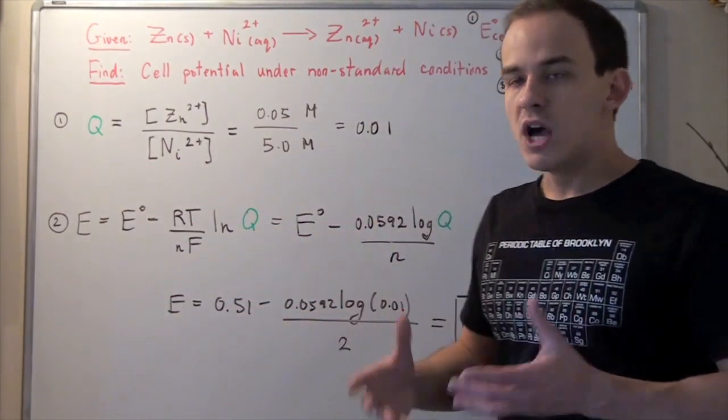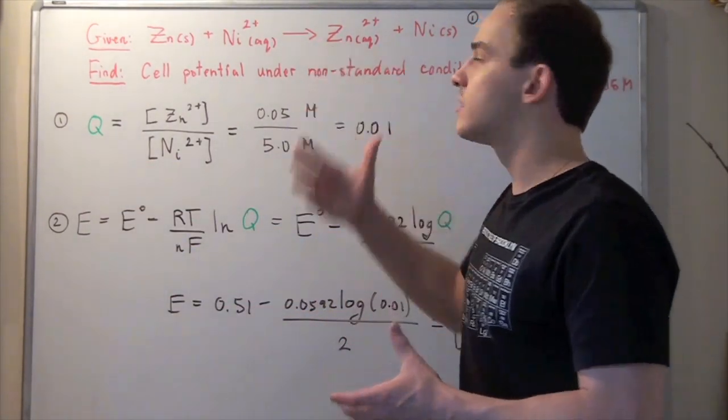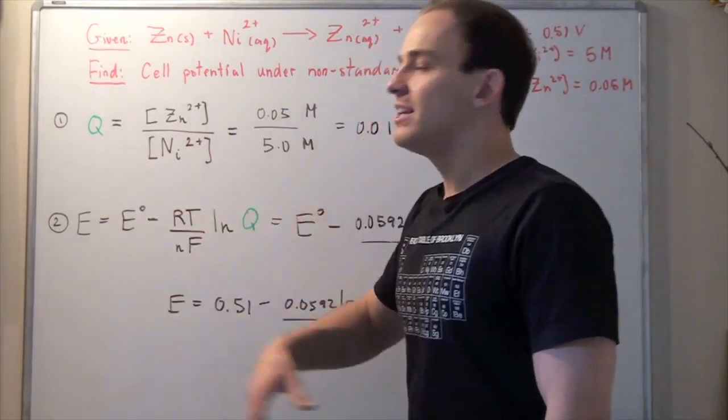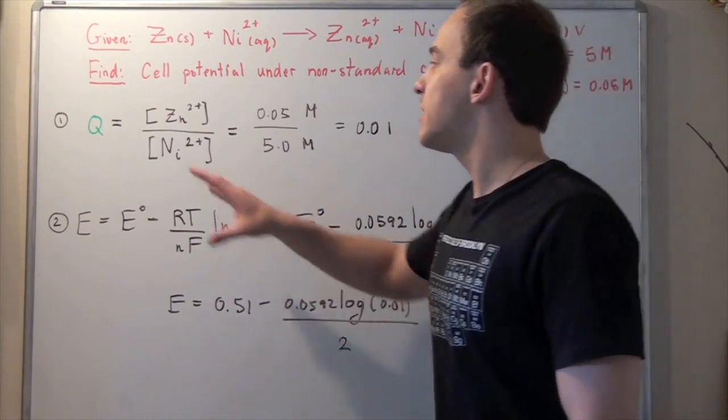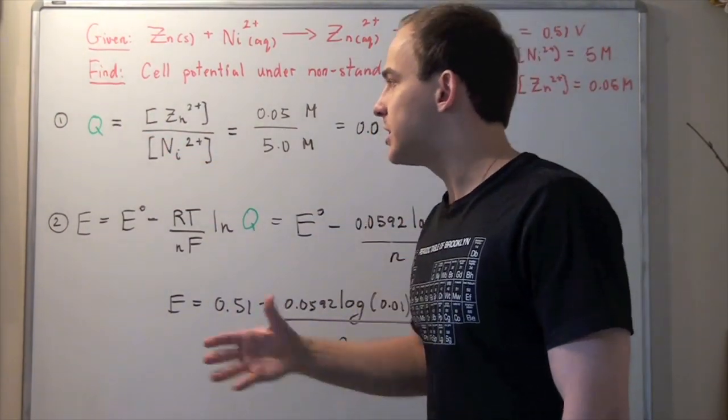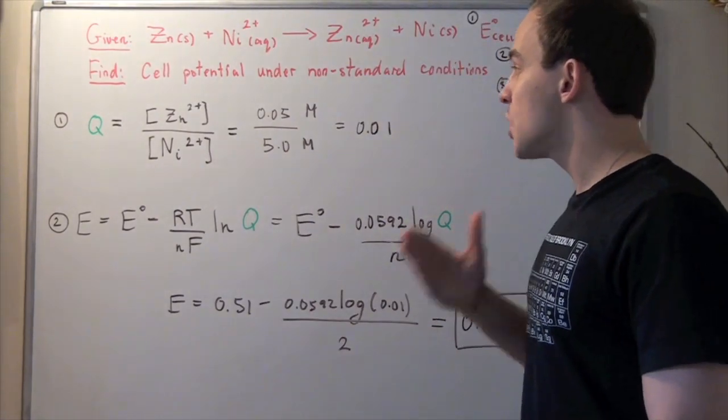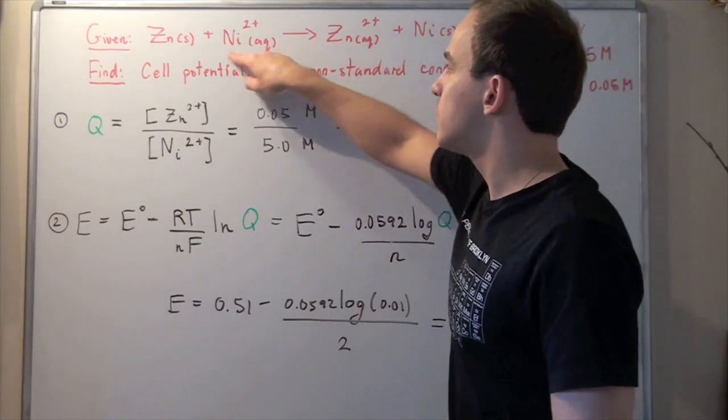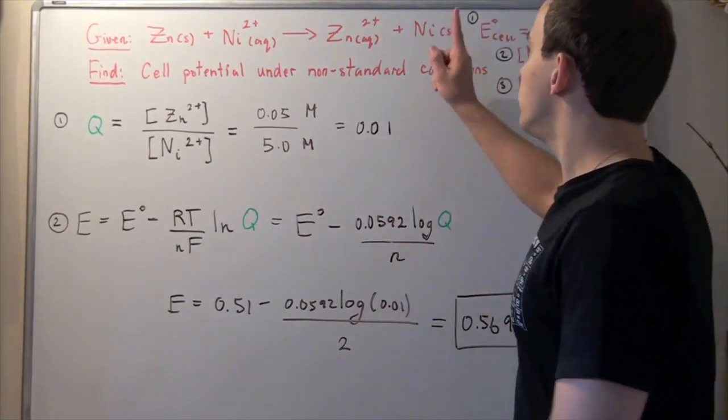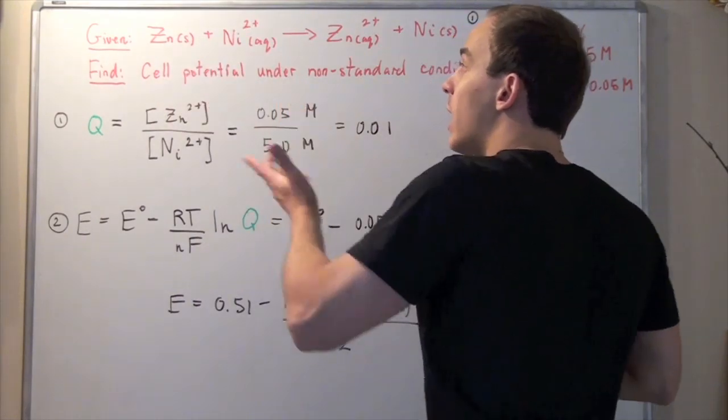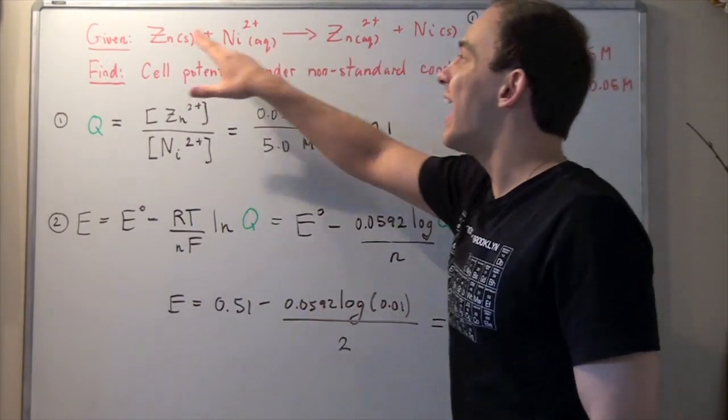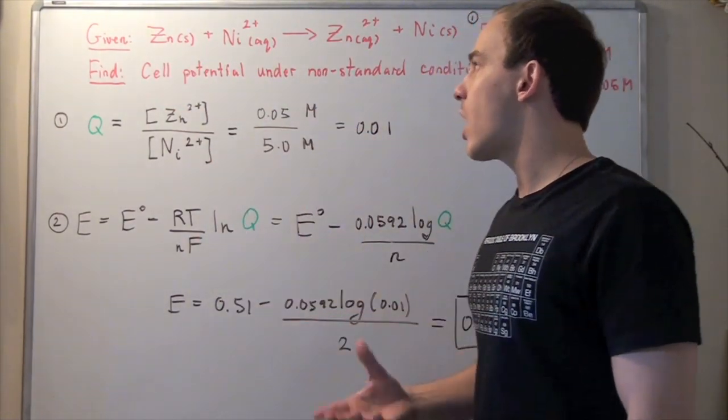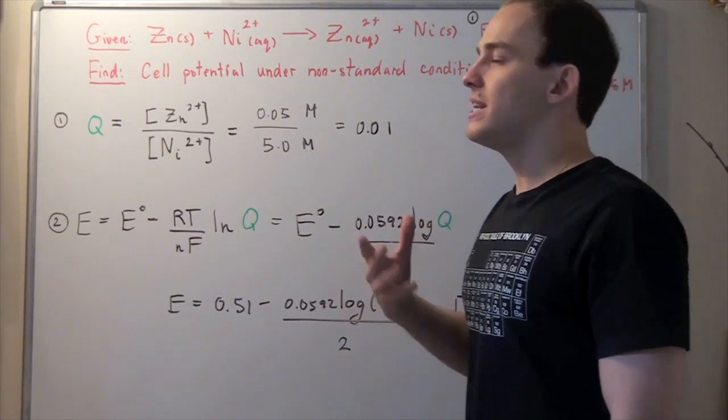Remember, Q is a ratio of the concentration of product over the concentration of reactants. Our expression is similar to K, the equilibrium constant, except this condition represents a situation that is not at equilibrium. So we take our concentration of zinc and divide it by the concentration of nickel. We don't include the solids because only gas molecules and aqueous atoms are included in our expression.